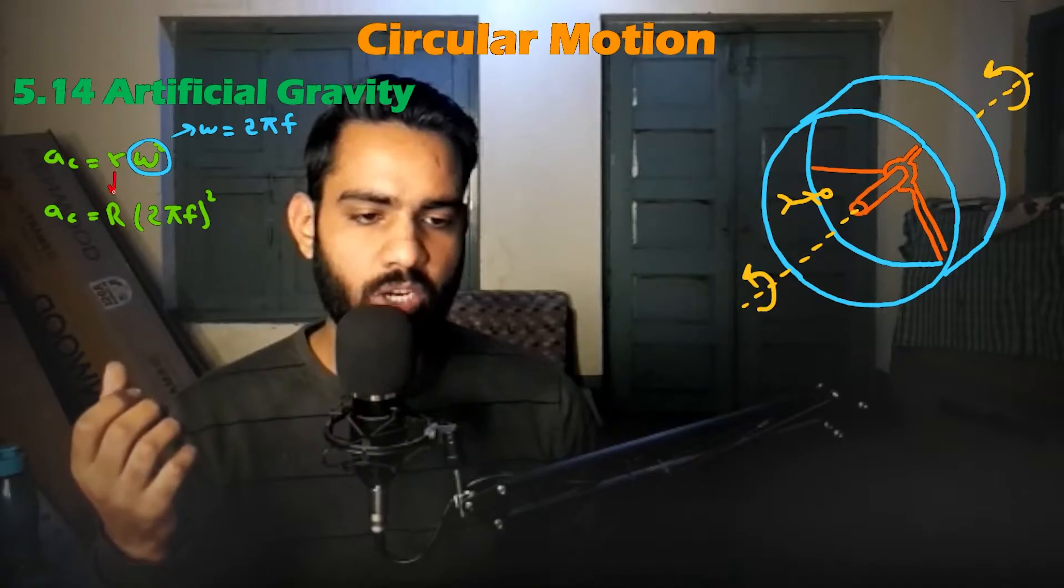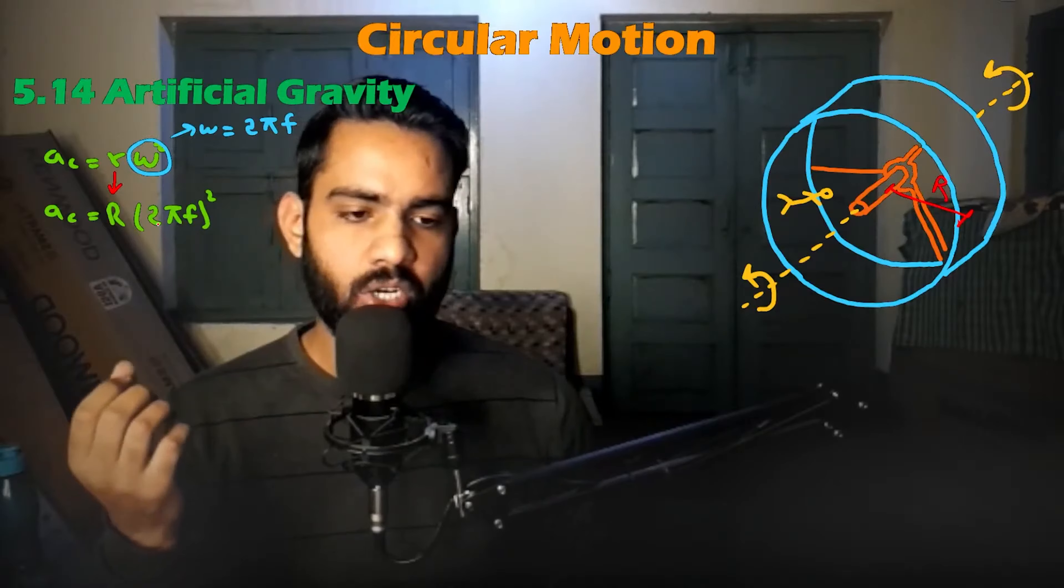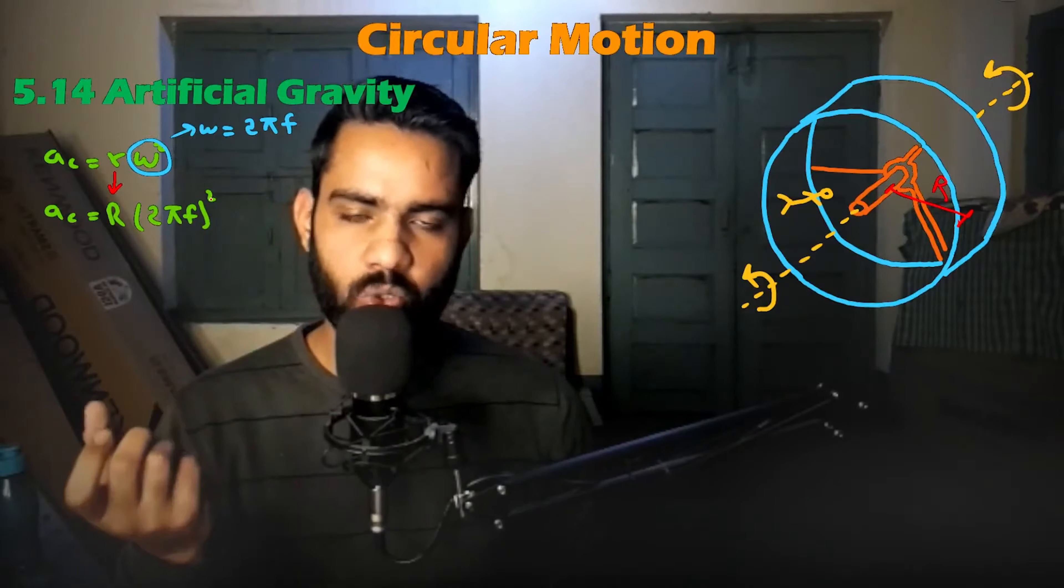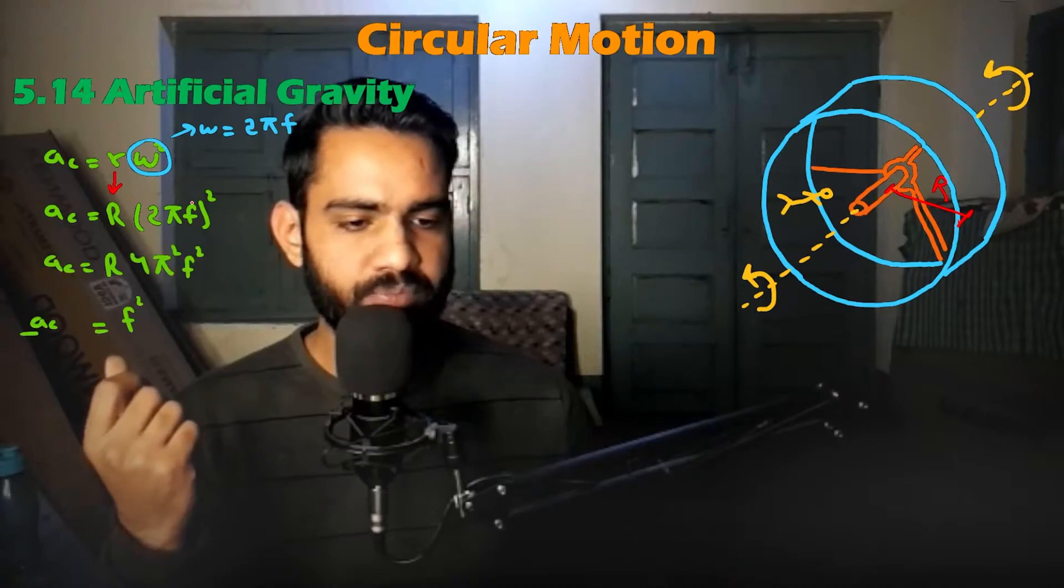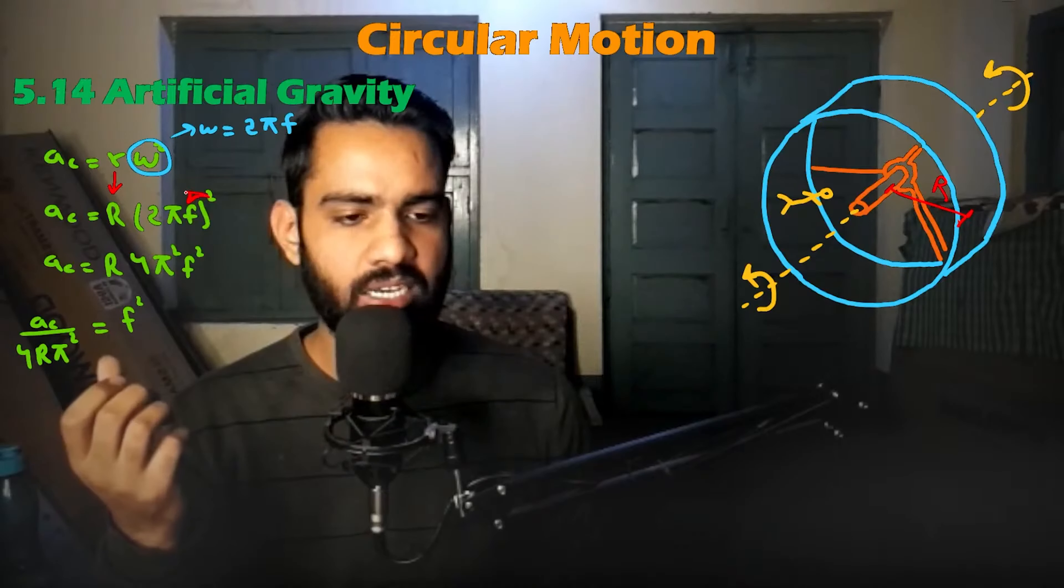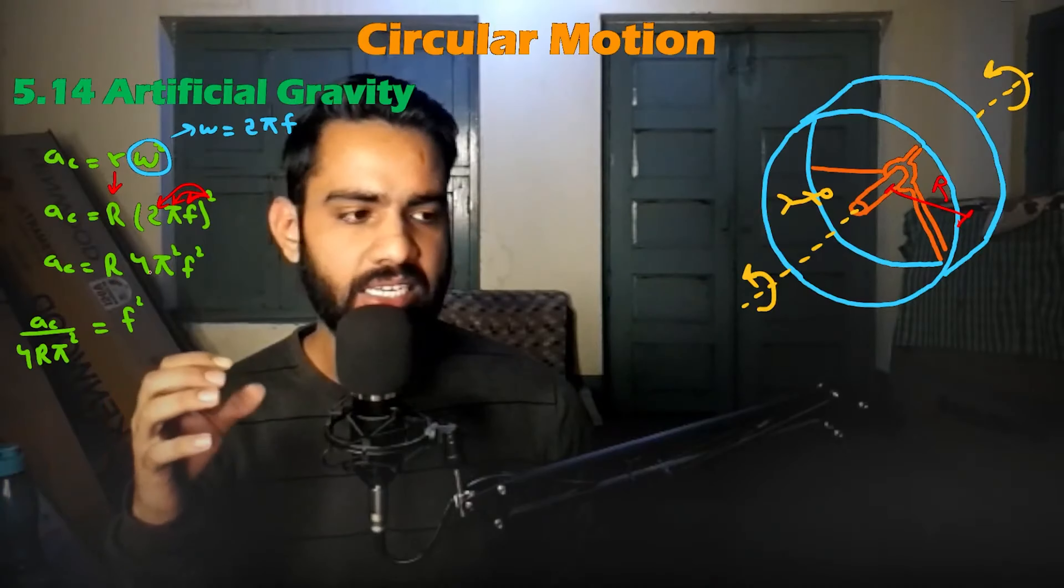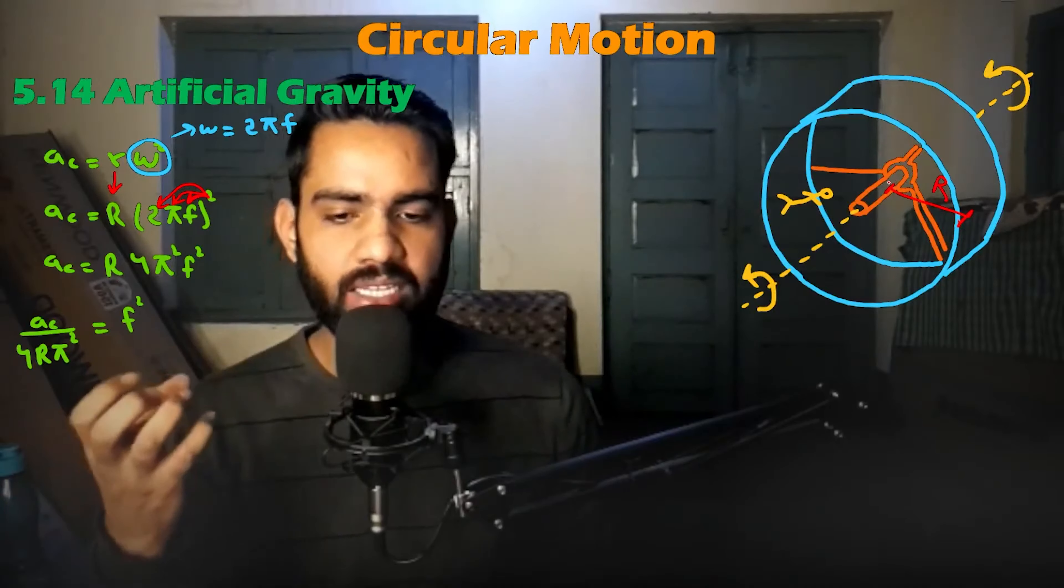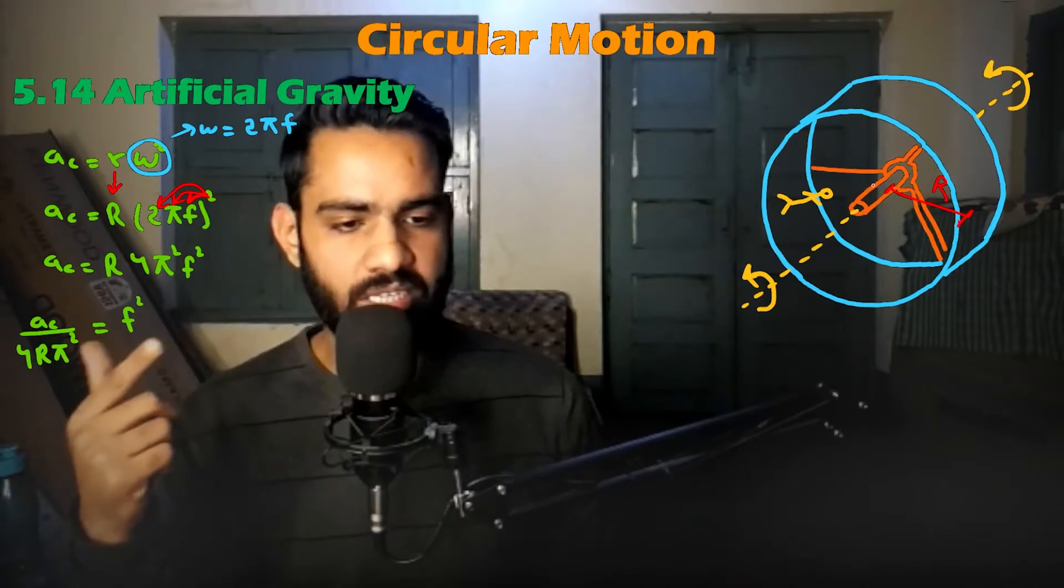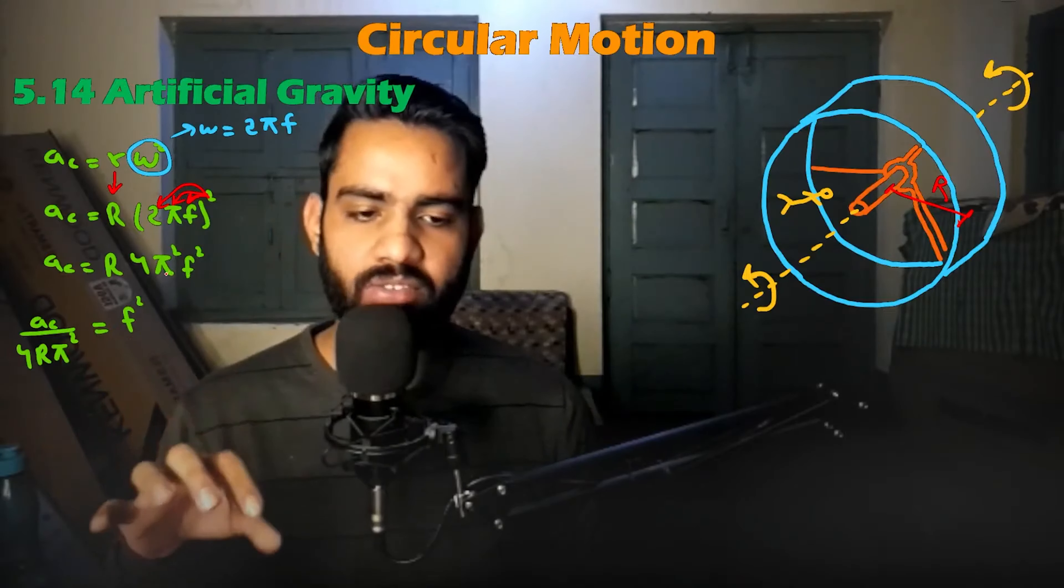r—basically this r is the ship radius—times 2 pi f squared. Now if we expand this square, then f and pi will be squared, 2 will be squared, and r will be there. Basically it depends on the frequency of the rotation.